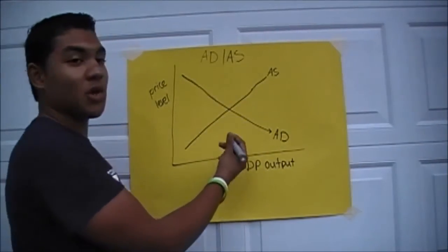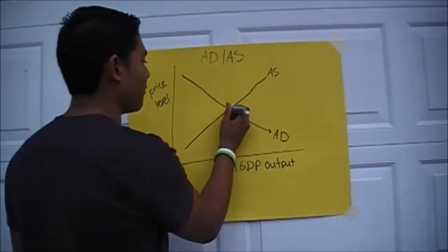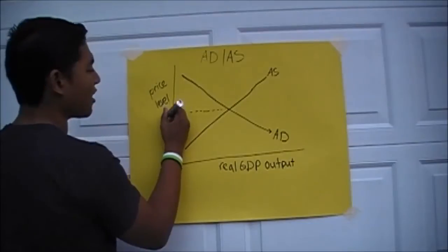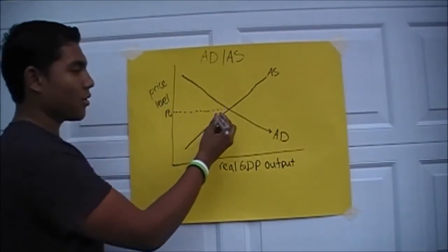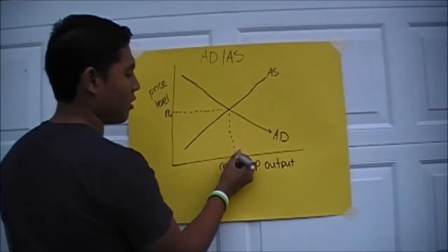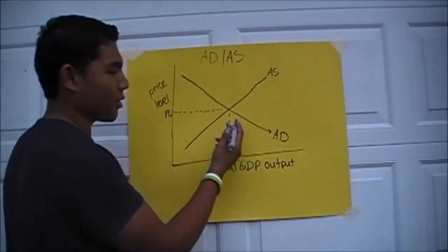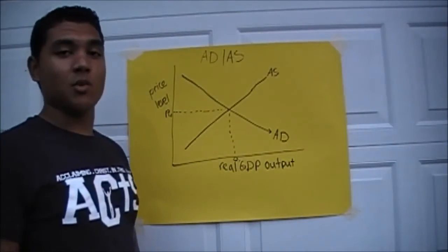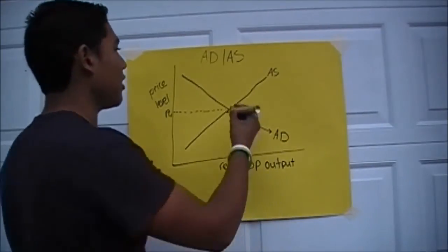Okay, so here in the middle where these two intersect, it's called equilibrium. So this is going to be price level at equilibrium, and this is going to be quantity at equilibrium. But we're not done. There's another line called the LRAS, which means long run aggregate supply, and that goes here.